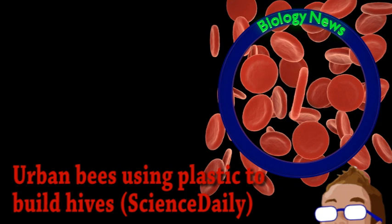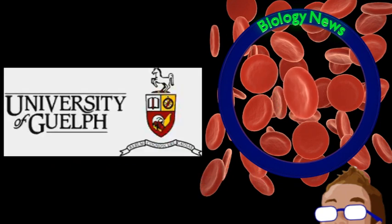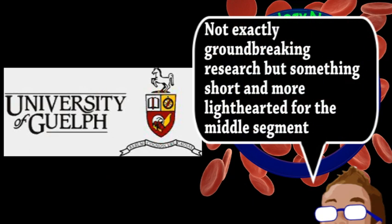Next is a quick update from the world of biology. Scientists from the University of Guelph have identified two species of bees that started using plastic materials in their hives. Now this isn't to advocate leaving plastic in the environment, but it is interesting to see how certain organisms are adapting to the realities of a human-dominated world.